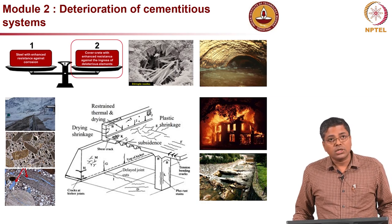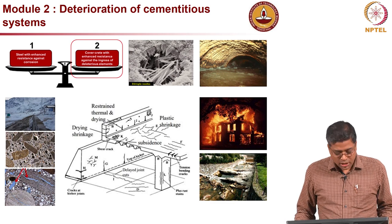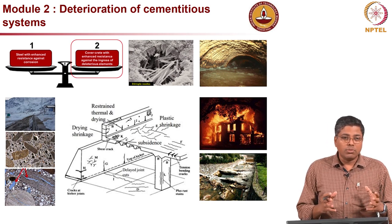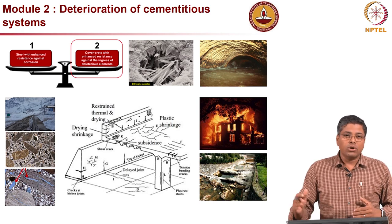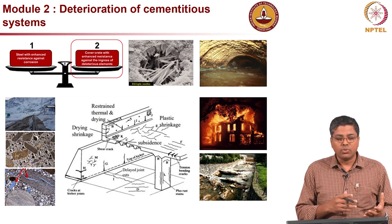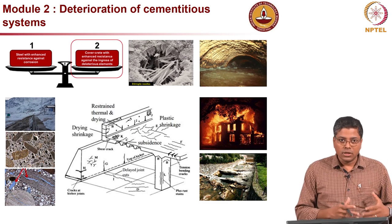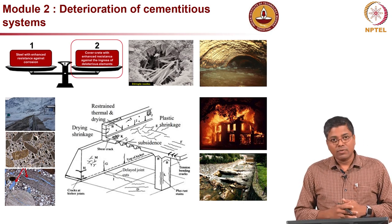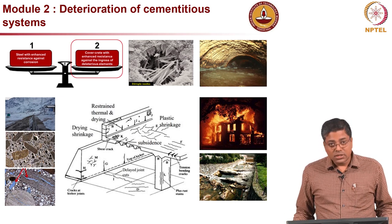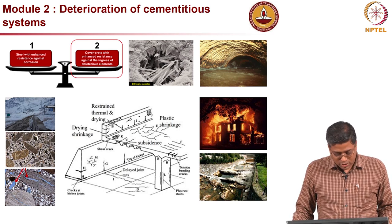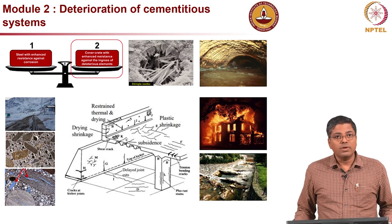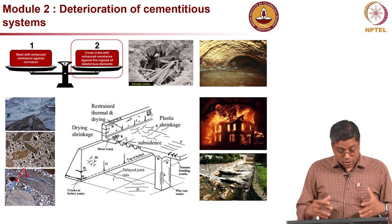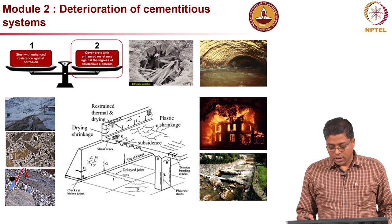Module 2 is on deterioration of cementitious systems. We will look at various chemical aspects — what kind of chemical reactions occur in concrete structures long term. We will cover shrinkage, which happens at a very early stage, delayed ettringite formation, reactions between cement paste and sulphates, reactivity of aggregates, and what can go wrong in concrete under fire attack. In this module we will focus purely on the concrete or cementitious system, not the steel.